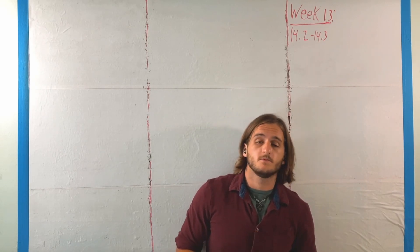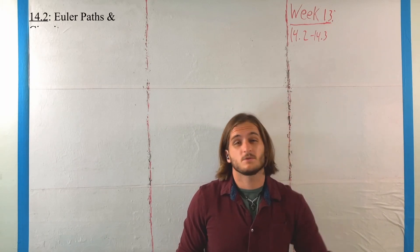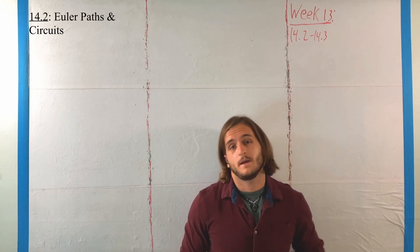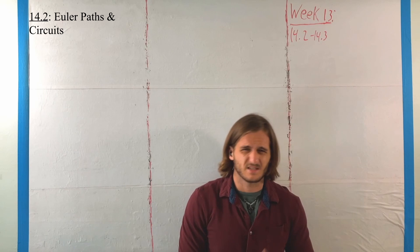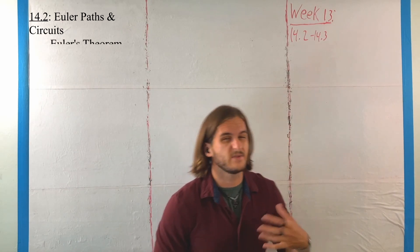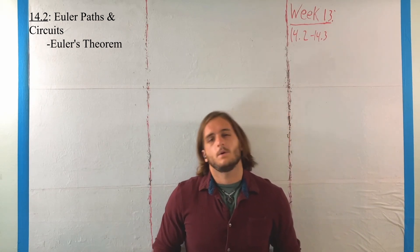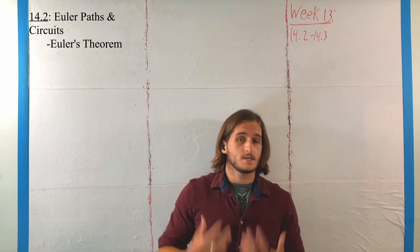this week we're going to keep moving into chapter 14, looking at 14.2 first, which talks about what are called Euler paths and Euler circuits. This is a special kind of graph, a special sort of pattern we like to look for in graphs, so we're going to find a somewhat quick way to identify them in terms of what's called Euler's theorem,